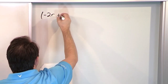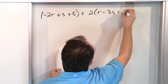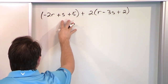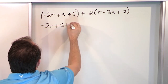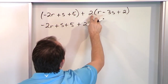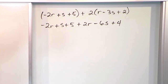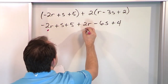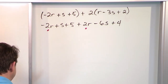Final problem: negative 2 times the quantity r plus s plus 5, plus 2 times the quantity r minus 3s plus 2. I'd love to add the terms inside each set of parentheses, but they're all different — I can't. So I distribute. The second group: 2 times r is 2r, 2 times negative 3 is negative 6 (don't forget the s), and 2 times 2 is 4. The r terms are negative 2r and positive 2r — negative 2 plus positive 2 is 0, so those terms drop away.